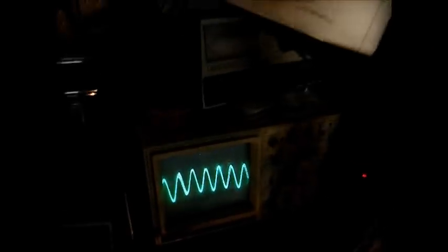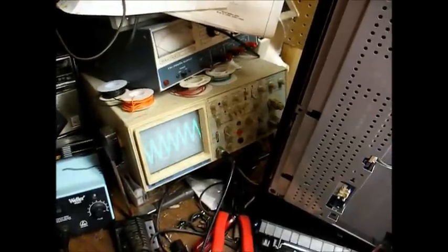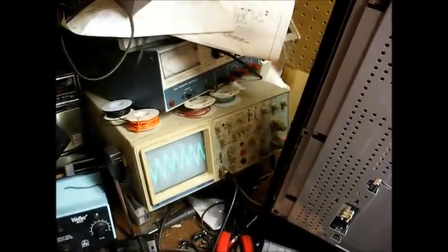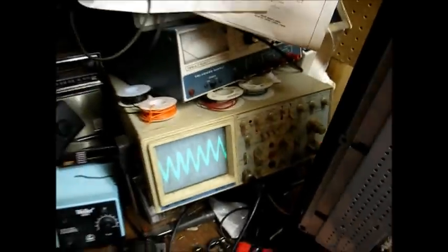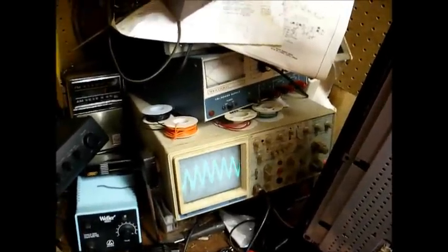This is what we're getting. And we're set to 0.2 volts per division. So yeah, that's a very small signal coming out of the signal generator. Now I'll hook up another signal generator and show you what it's supposed to look like.